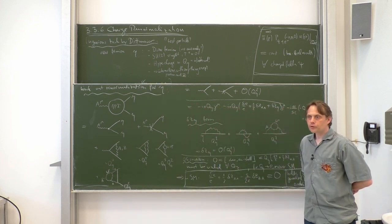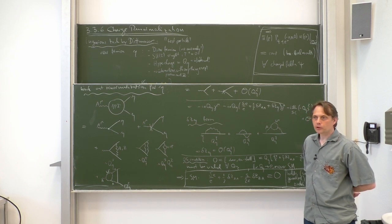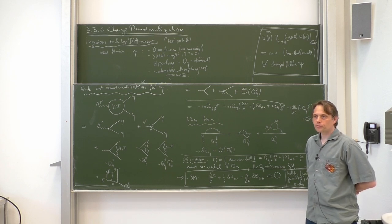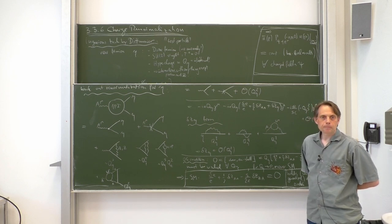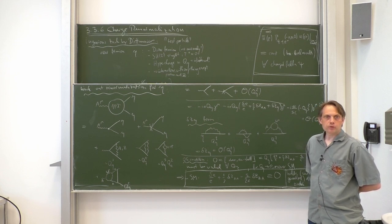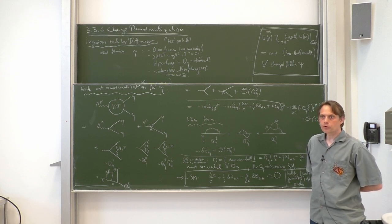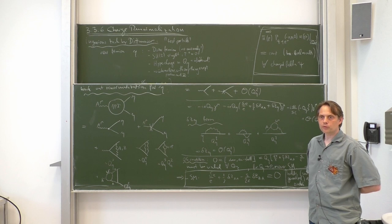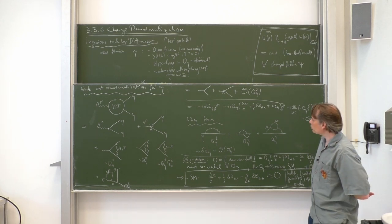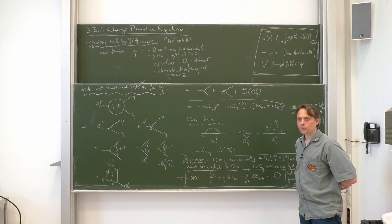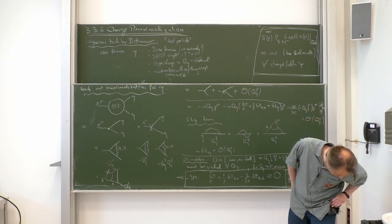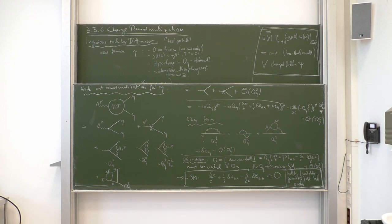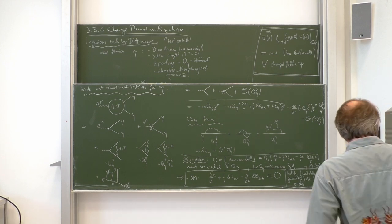This ends our discussion of the on-shell renormalization of the standard model and its interpretation. In the last part of the lecture I will give a few minutes of overview of how these loop corrections can be applied in practice and what important loop corrections actually exist, since there are quite interesting loop effects which play an important role in phenomenology of the electroweak standard model.